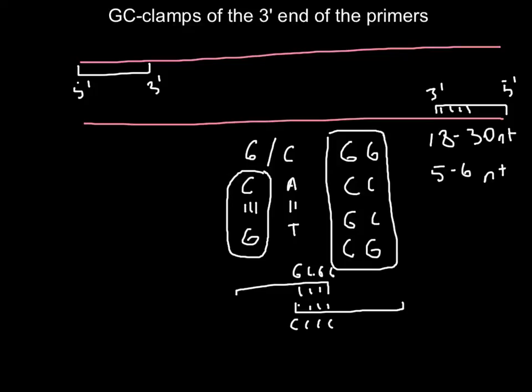So also, though we have a sequence for our primer about 18 to 30 nucleotides, only the last five to six nucleotides are important, because this is where the polymerase is going to attach. The rest of the primer, or beginning of the primer, is not that important for polymerase attachment.